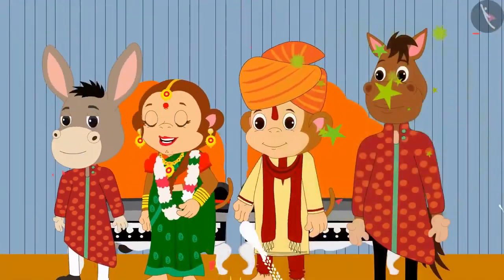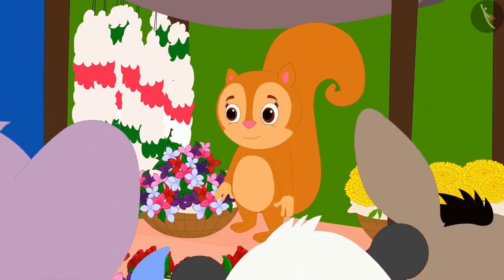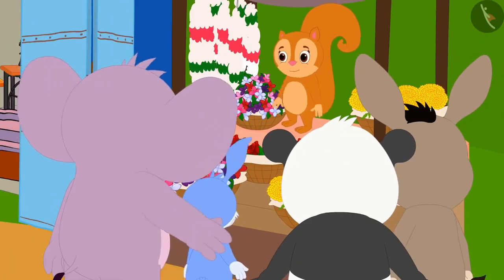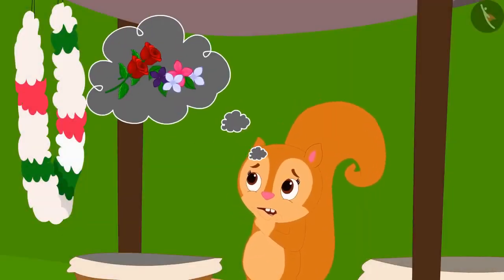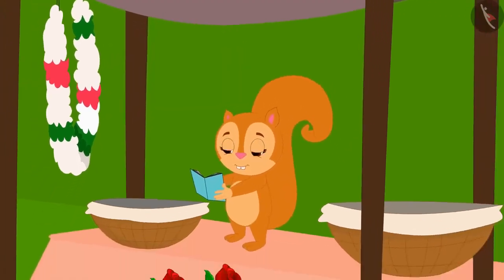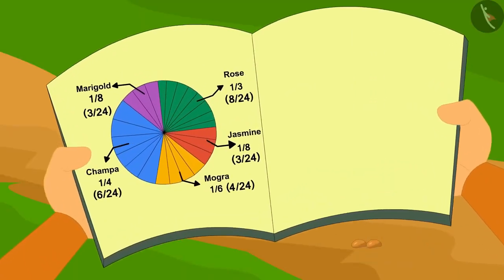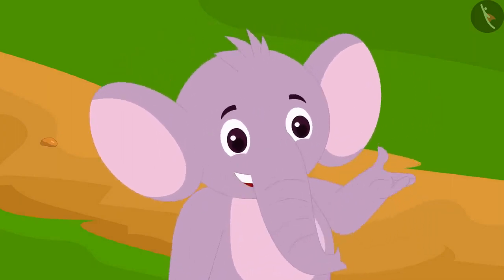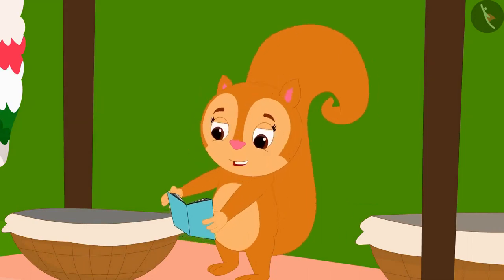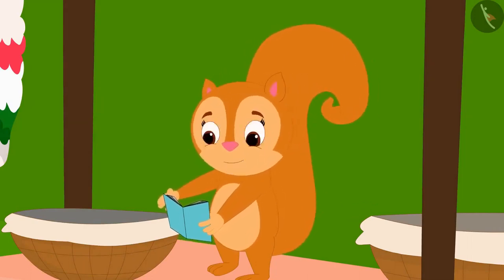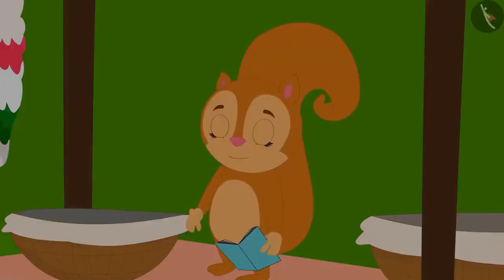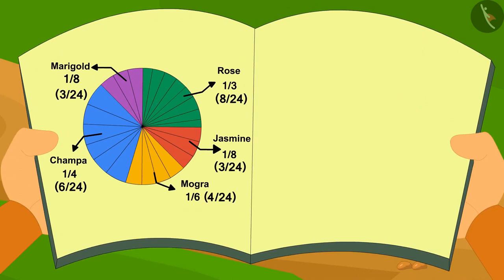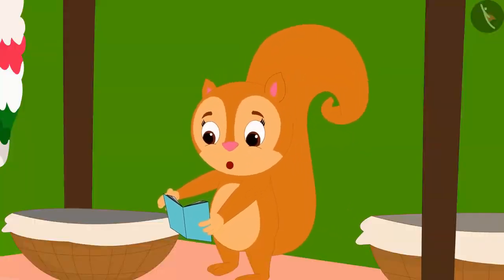With the wedding season in Champapur, Chanda is getting a lot of orders to decorate the wedding pavilion with flowers. Chanda is wondering which of her flowers people like the most. To find out, Chanda created a pie chart by looking at the record of flowers used in previous orders. Just then, Appu came to Chanda's shop. Chanda, what is this pie chart you made? This shows the popularity of my flowers. According to this, the largest part is the Champa flowers — it means Champa flowers are the most popular.